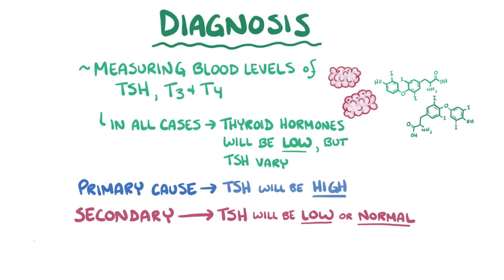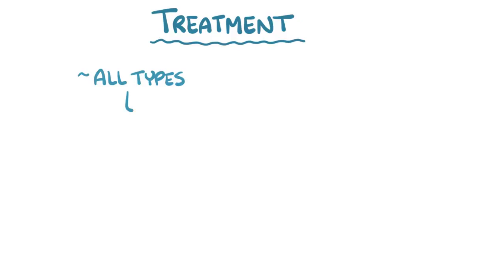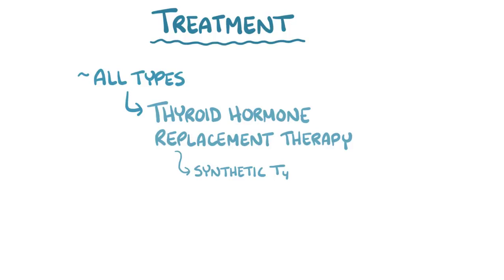Because congenital hypothyroidism can be hard to detect in newborns, many countries screen all newborns for congenital hypothyroidism within the first few weeks of life. Treatment for all types of hypothyroidism is thyroid hormone replacement therapy, primarily using synthetic T4.